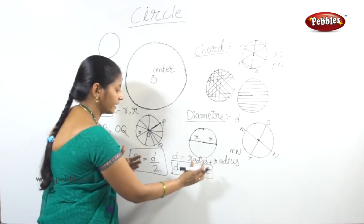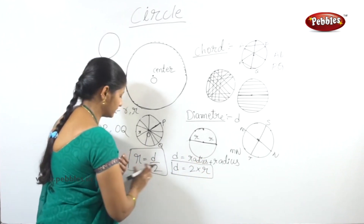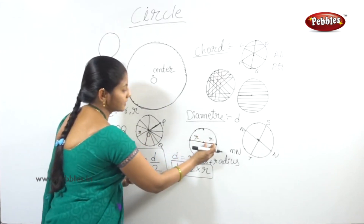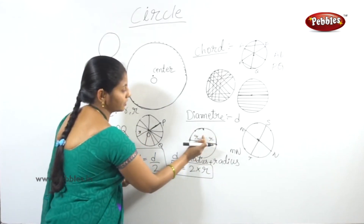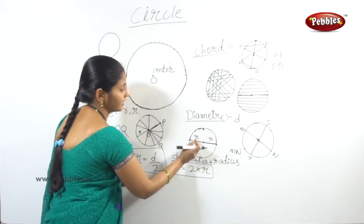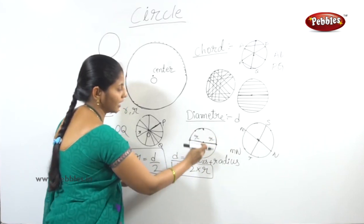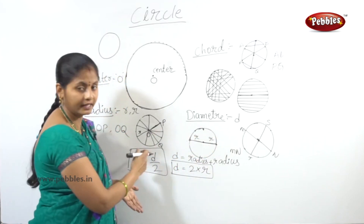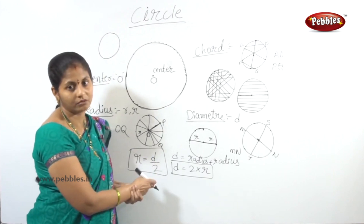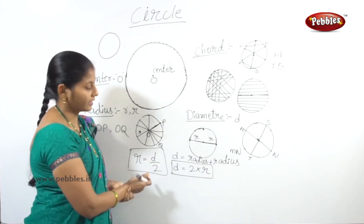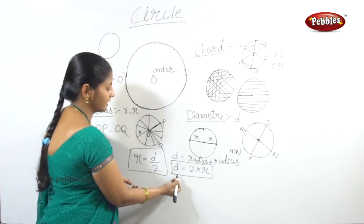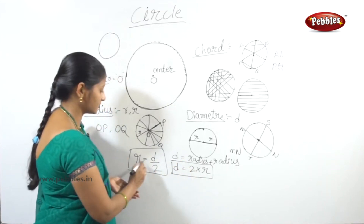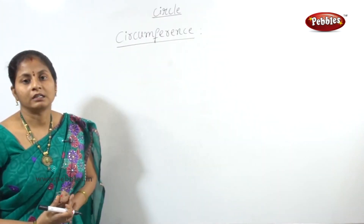To find the radius, we use: radius is half of the diameter. So r = D divided by 2, or r = D/2. This is the relation between radius and diameter: d = 2r and r = d/2.